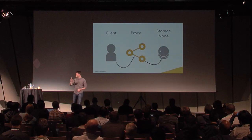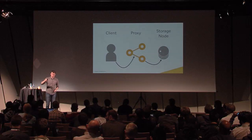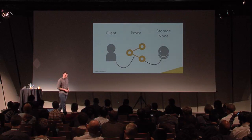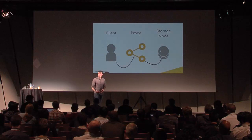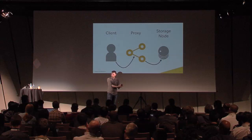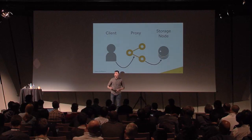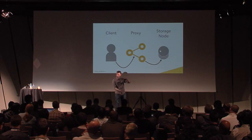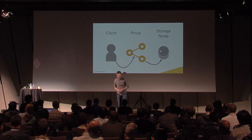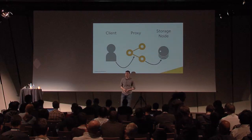There was a question about deletes. In general with the Swift API, you can overwrite a particular object — you can write it once, and then use the same name and put new data on it. If you delete it, you will delete that object name and it will be gone. Swift does have a feature for versioned writes, so you can push it down on a stack and a delete will pop the stack. But without enabling that particular feature for a particular container, if you delete data it's gone — that's what you asked it to do.